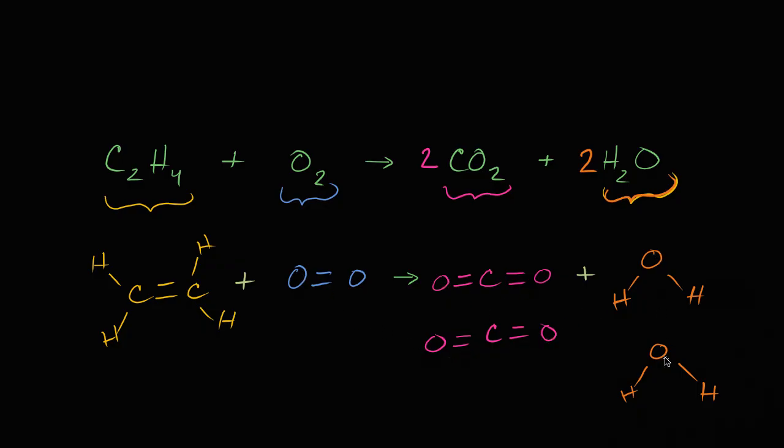So what if, so in order to balance, in order to have six oxygens on the reactant side, we need three of these molecules. So another one and another one right over there. And now we're all balanced.